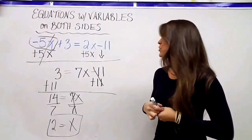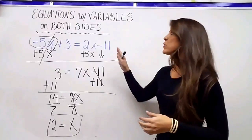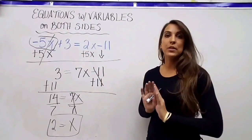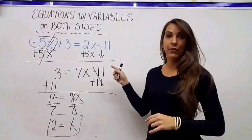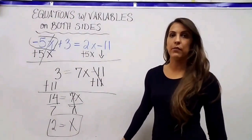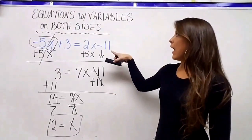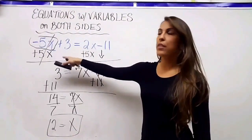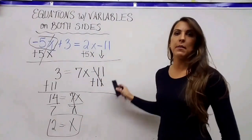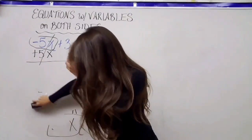So a recap: when I have an x on the left and an x on the right, I push it to one side first using inverse operations, and then I isolate the variable using inverse operations again. I could have added 11 to both sides to start, or subtracted 3 from both sides — I would have gotten the same answer either way. Let's do another example.